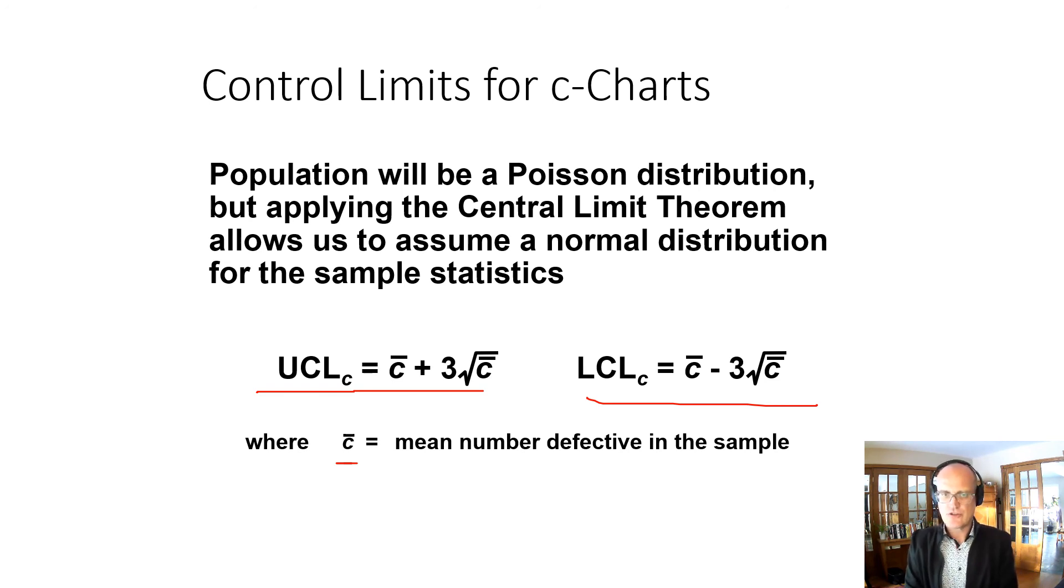So with attributes, attributes are binary, categorical: yes, no, pass, fail. If you know the number of times you're drawing a sample to get a proportion, you would use a p-chart, and otherwise you would use a c-chart. That, very short and in a nutshell, is what you need to know for statistical process control charts for attributes. Thanks, have a great day.